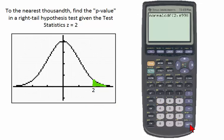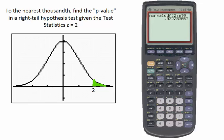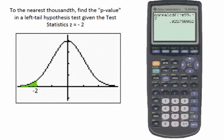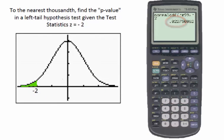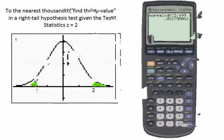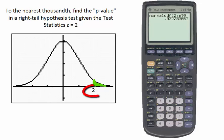When we press enter, we have the area 0.023 to the nearest thousandths. Notice that when the z-score was negative, the area was positive 0.023, and when the z-score was positive, the area was again positive 0.023.